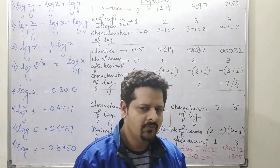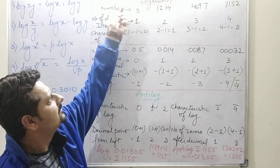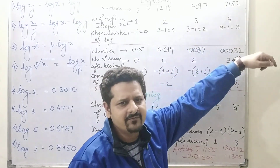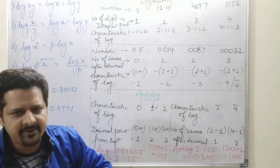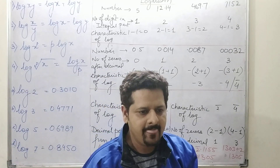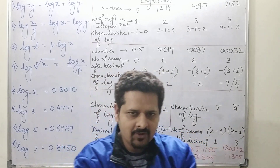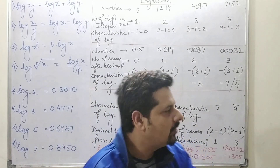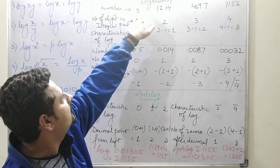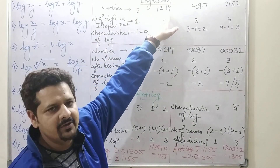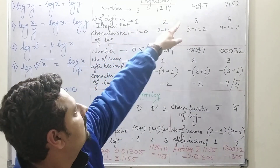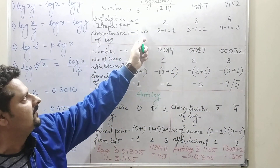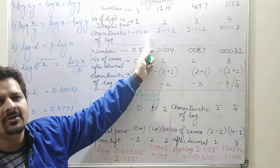Now, how to calculate log — I have taken some numbers: 5, 12.14, 469.7, and 1152. The first step before going to the log table is to decide the characteristic of that log. To find the characteristic, you look at the number of digits in the integral part. For 5, there is only one digit; for 12.14, there are two digits in the integral part; for 469.7, there are three digits. The characteristic equals the number of digits in the integral part minus one, so one digit gives characteristic 0.